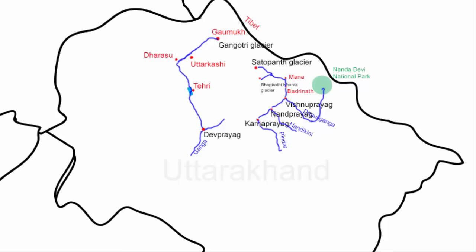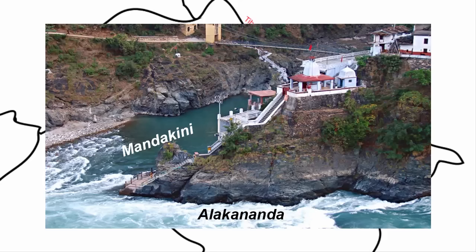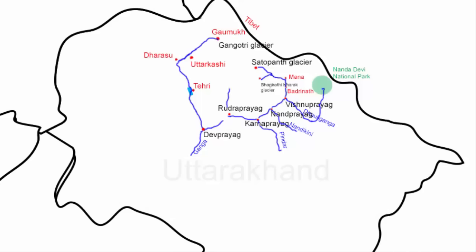From Karnaprayag the Alakananda takes a western direction, and in about 30 kilometers it reaches the town of Rudraprayag. Here the Mandakini river joins the Alakananda — the Mandakini originates from Kedarnath and meets the Alakananda near Rudraprayag. This is the fourth place of the Panchprayag.